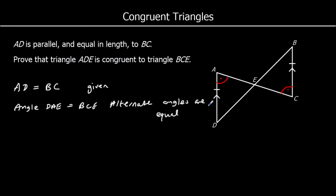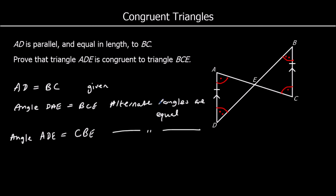We've got another pair of alternate angles: angle ADE equals angle CBE, and they are also alternate angles — alternate angles are equal, same as above. So we've got Angle Side Angle, and we've proved the triangles are congruent — we've arrived at one of our rules.